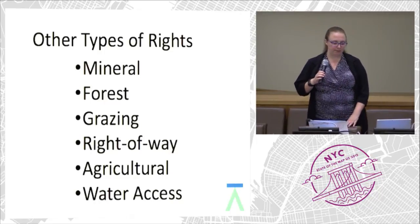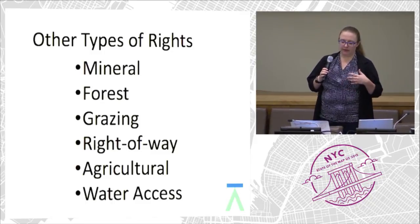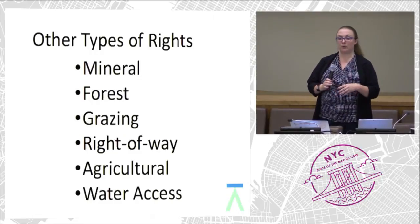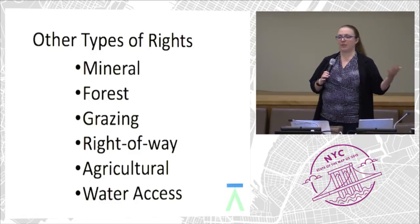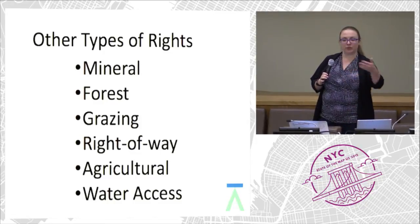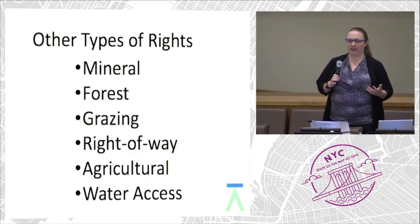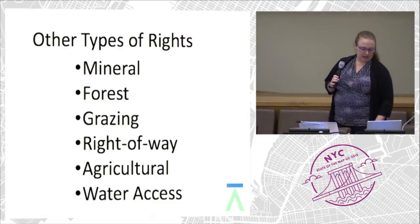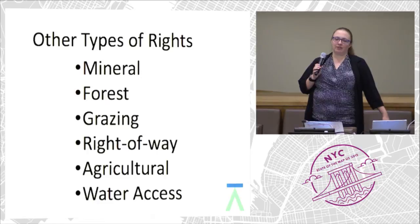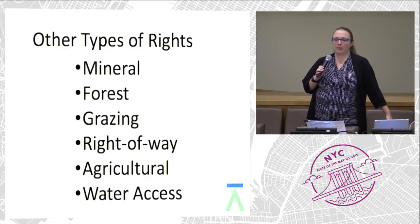In talking about property rights and land tenure, there are other things to have rights to — like the rights to mine for minerals, or to choose to chop down trees in your forest, or grazing rights, meaning you can traverse through a property. One I never really thought about is having the rights to the fruits that fall from a tree, but not being able to pick them off the tree. That's a type of land right. So we're not just talking about homes, but also potential livelihoods.